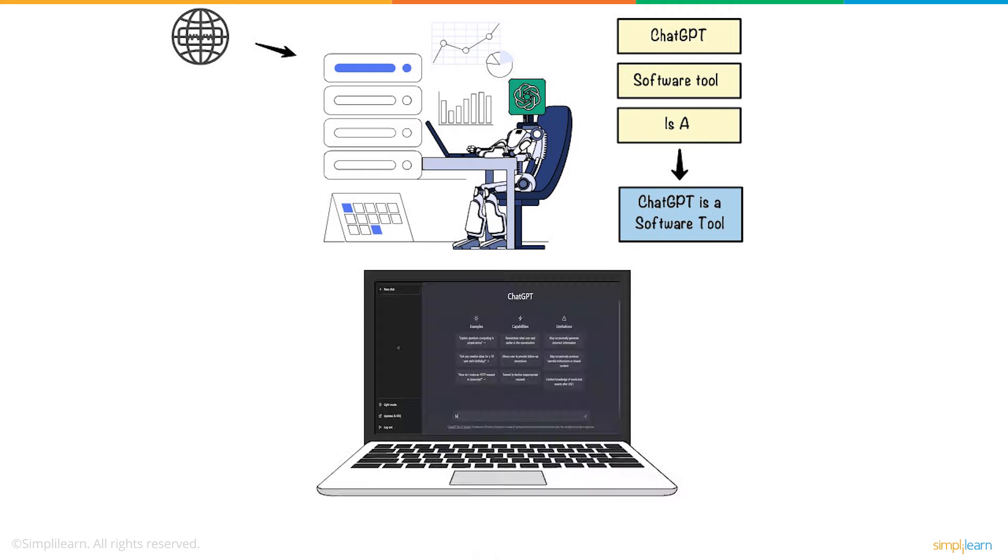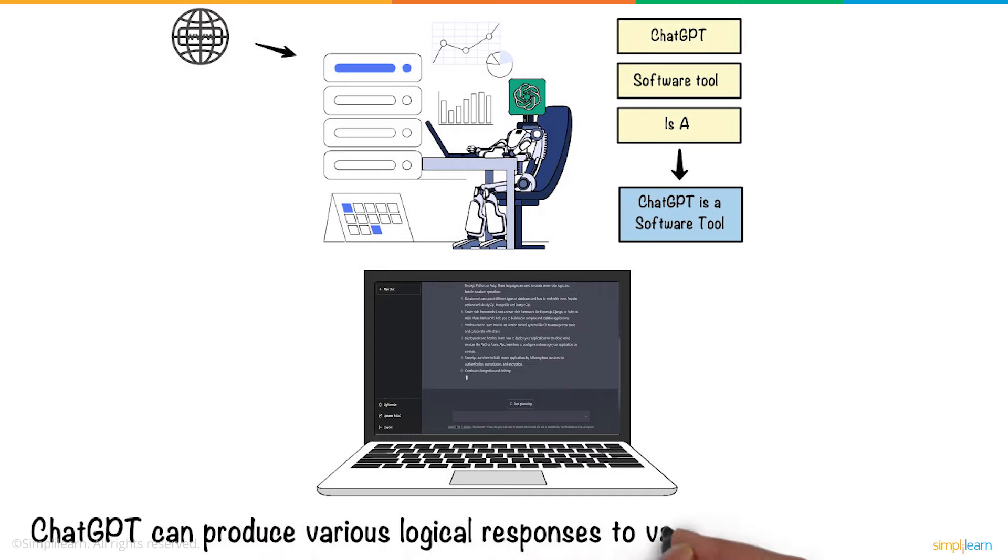It responds to a prompt by determining the next word based on the context, then repeats the process until a stop condition is met. As a result, ChatGPT can produce various logical responses to various queries and prompts.